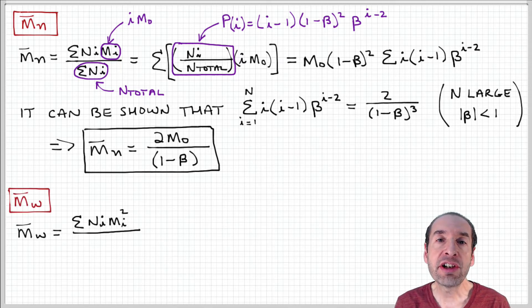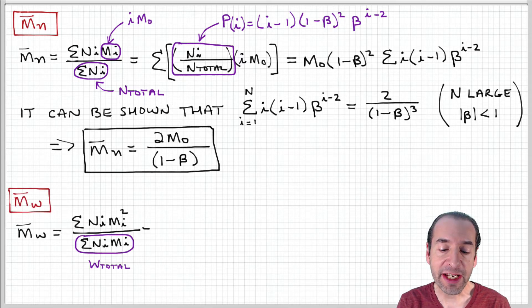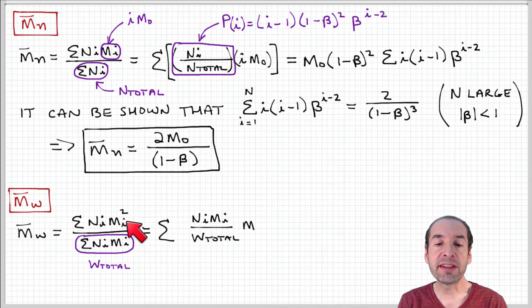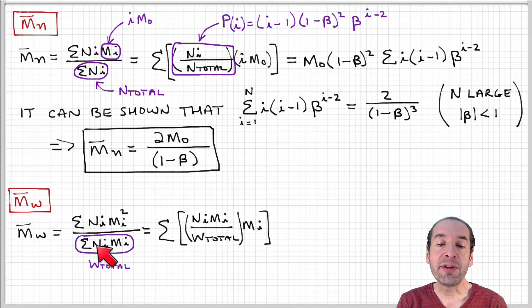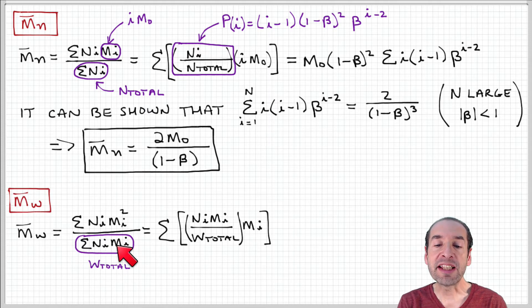Our starting point is the definition of the weight average molecular weight. Remember that's the sum of NIMI squared over the sum of NIMI. Notice that this quantity, the sum of NIMI - the number of molecules that have a particular molecular weight times that molecular weight - has units of grams (moles times grams per mole). So this is actually representative of the total weight of polymer in the sample.